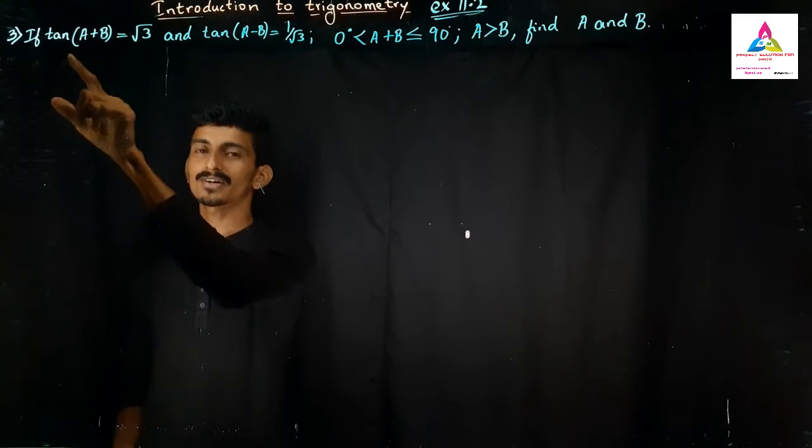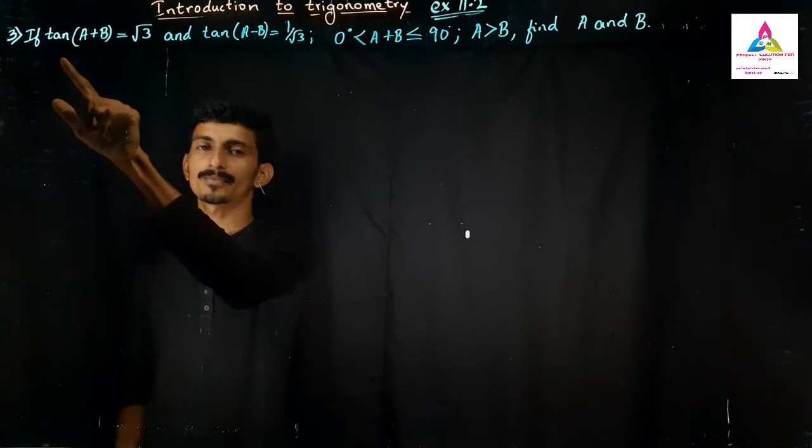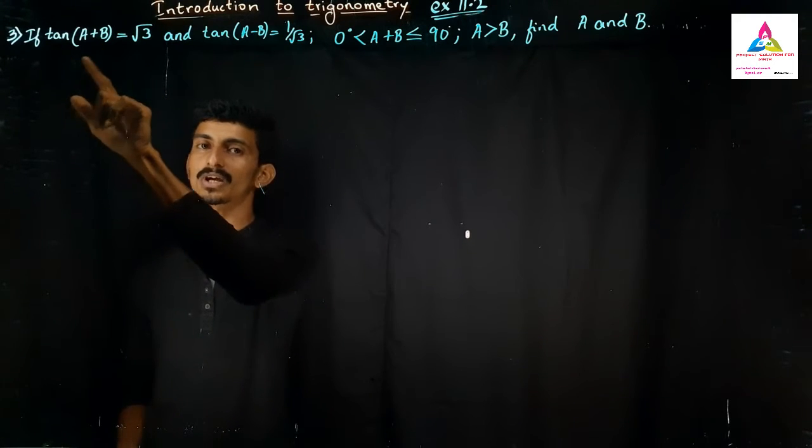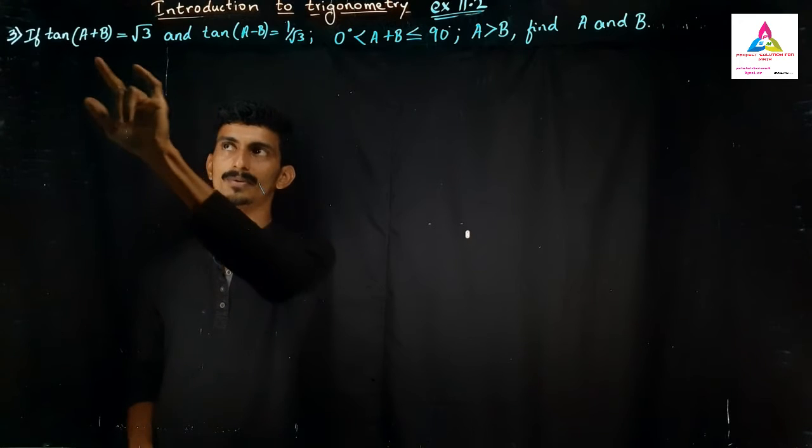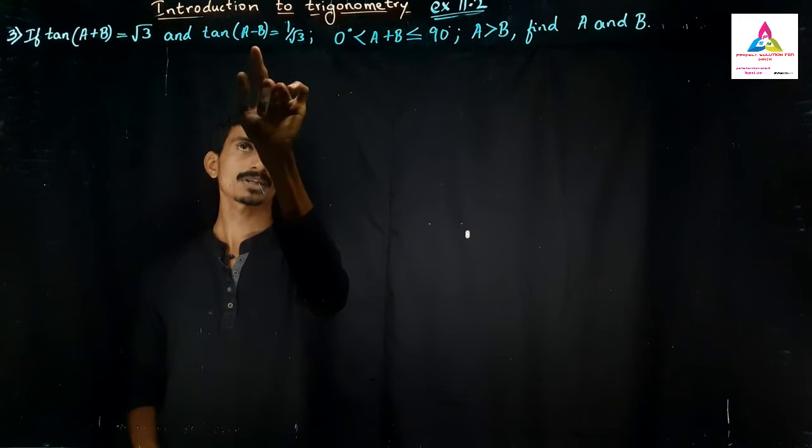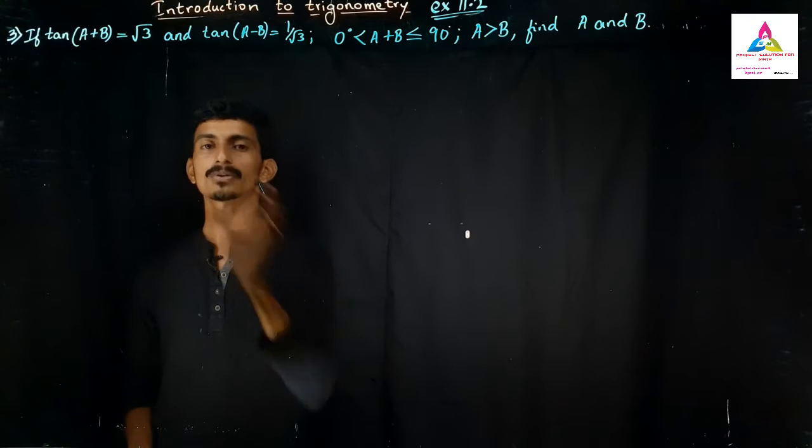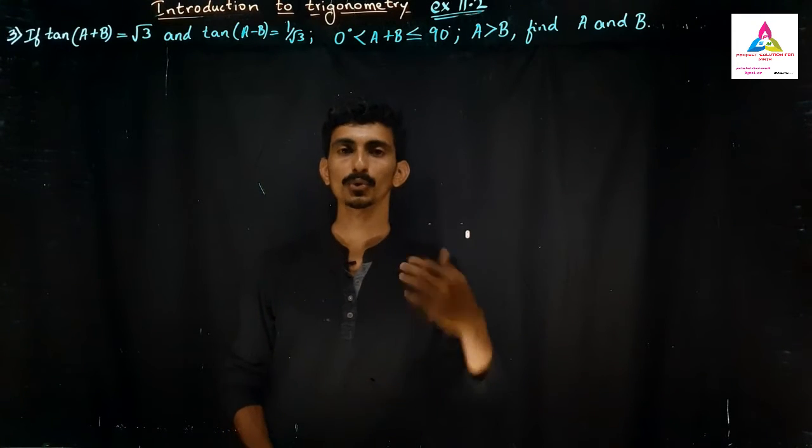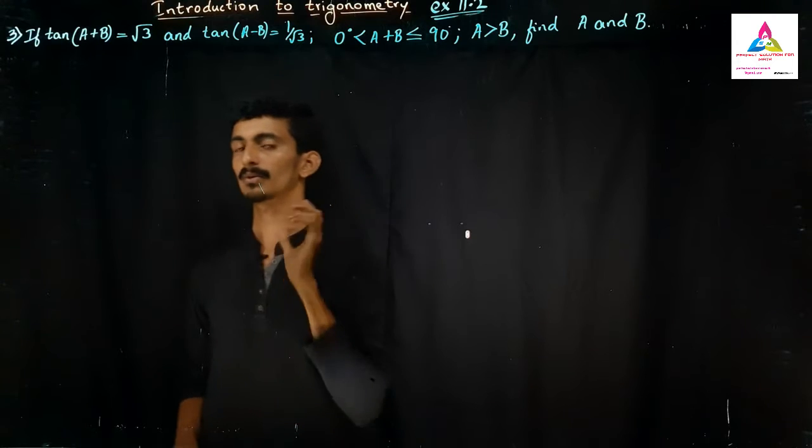But they have given a touch of trigonometry because that is tan(A+B) is a trigonometry function, and here we have tan of the function but A-B. So it is a combination of trigonometry along with the linear equation. So how to solve this problem? Let us solve this.